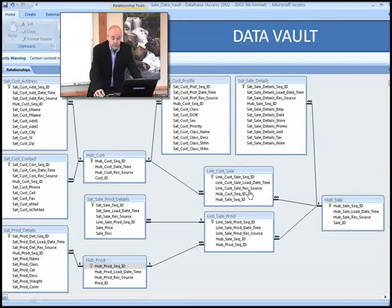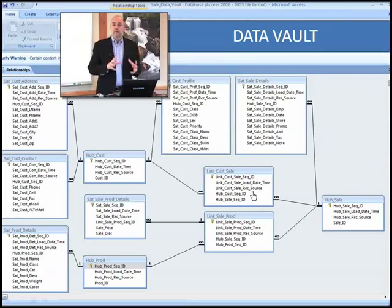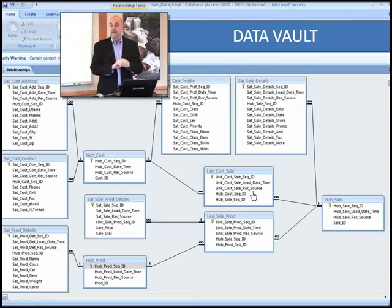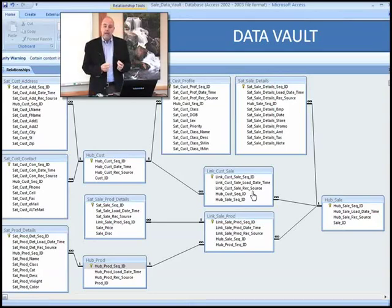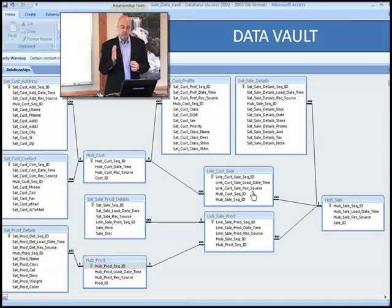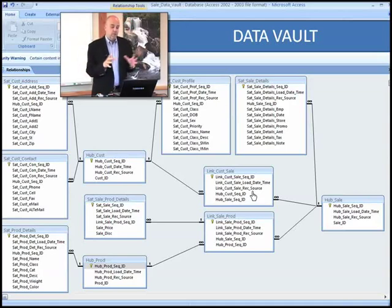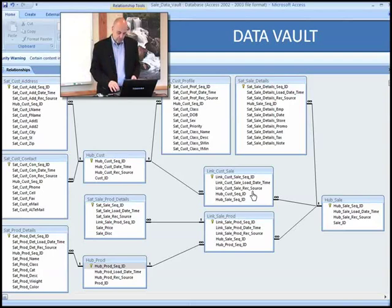The other three attributes in these link structures — the new key, date-time stamp, and record source — are those required for enterprise data warehousing and must be added to all structures. So if you were to compare apples to apples, if you subtract those three attributes from all the table structures, you're looking more at what would be similar in third normal form.